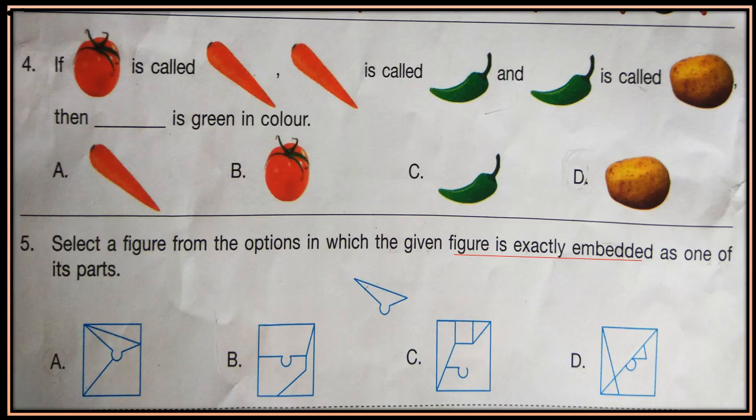Question 4. If tomato is called carrot, carrot is called chilli, and chilli is called potato, then what is green in colour? Identify which is green in colour and what it is called.